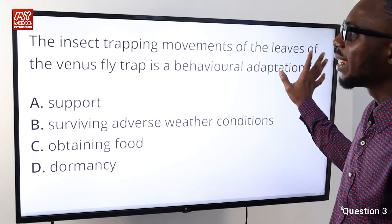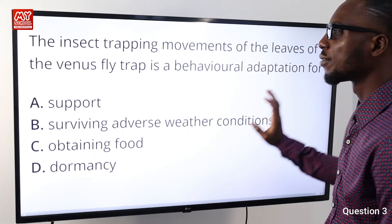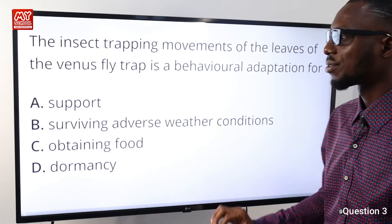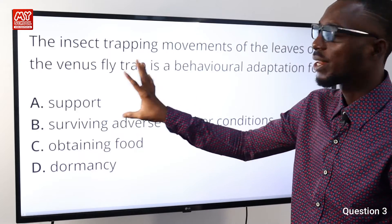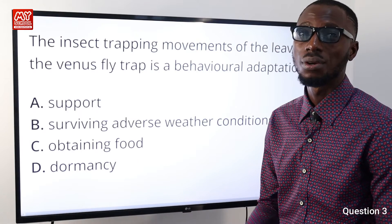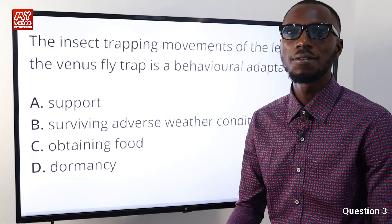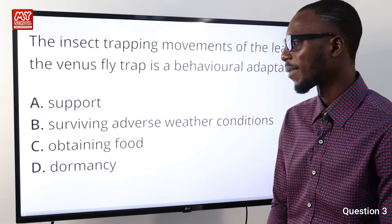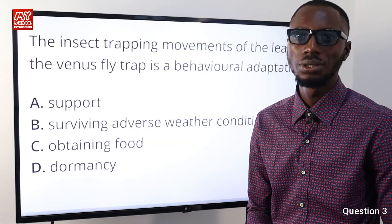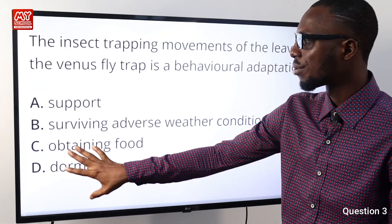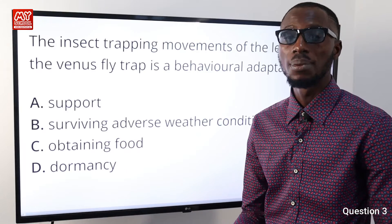Question number three: the insect-trapping movement of the leaves of the Venus fly trap is a behavioral adaptation for what? It is definitely not for support. Option B, surviving adverse weather conditions — no. Option C, obtaining food: the Venus fly trap is a carnivorous plant, just like the California pitcher plant and Drosera capensis — they are all carnivorous plants that feed on insects to obtain their food. Dormancy is a state of inactivity in seeds until favorable environmental conditions come about. So option C is correct — it is for obtaining food.